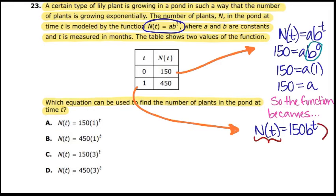n of t is a secret way of saying y, so I'm going to write that as 450. And then t is your x value, if you want to think of it as your x value, so you put the number 1. Anything to the first power is the same thing. So b to the first power is just b.